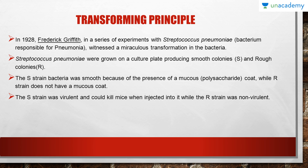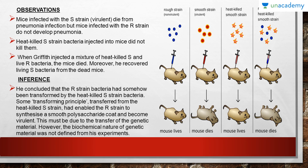The S strain bacteria was virulent and could kill mice when injected into them, while the R strain was non-virulent. When mice were injected with rough strain bacteria, the mouse did not die. When injected with the smooth strain bacteria, the mice died of pneumonia. When injected with the heat-killed smooth strain bacteria, the mouse did not die. But when he injected a mixture of rough strain and heat-killed smooth strain, the mouse died.